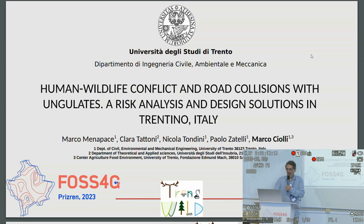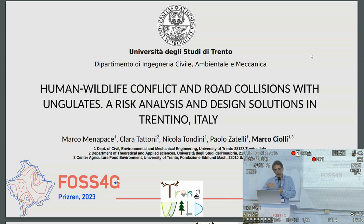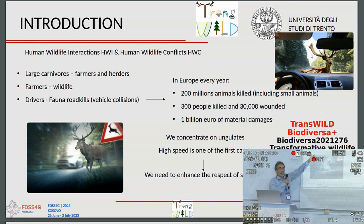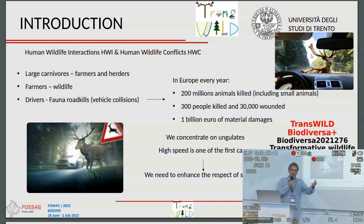My presentation is on human-wildlife conflict and road collisions with ungulates, presenting a risk analysis and design solution in Trentino. Human-wildlife conflicts are well known — large carnivores, farmers, and wildlife in general — but road kills are a huge problem. In Europe every year, 200 million animals are killed, around 300 people are killed in incidents, 30,000 are wounded, and there is around 1 billion euro in material damages.